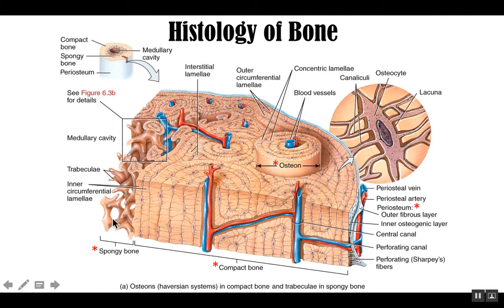The spongy bone units are different — there are none of these cylindrical osteons. Instead they have what's called trabeculae, which are branch or rod-like structures of the spongy bone. So you want to associate osteons with compact bone and trabeculae with spongy bone. You'll also notice there are osteocytes found throughout the bone, maintaining the bone matrix. The osteocytes are often found in little compartments known as a lacuna, and they help maintain that bone matrix.